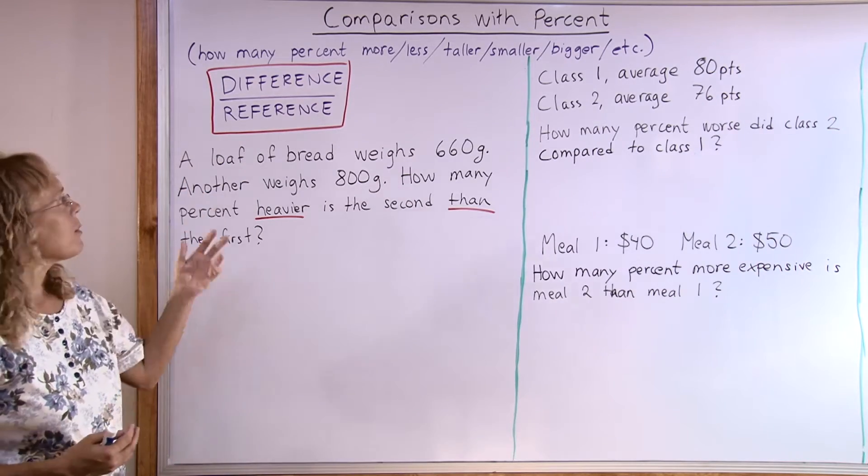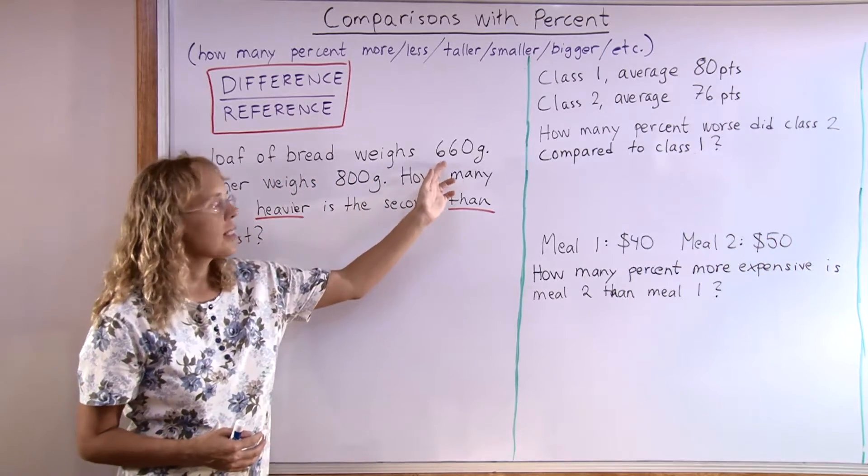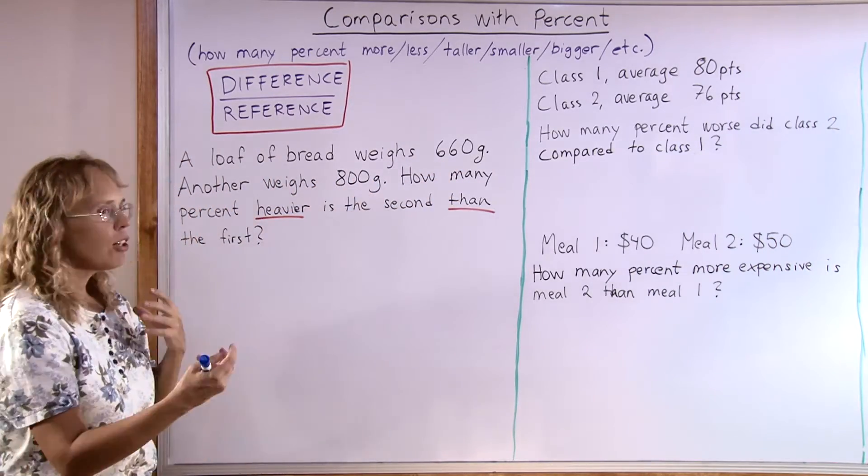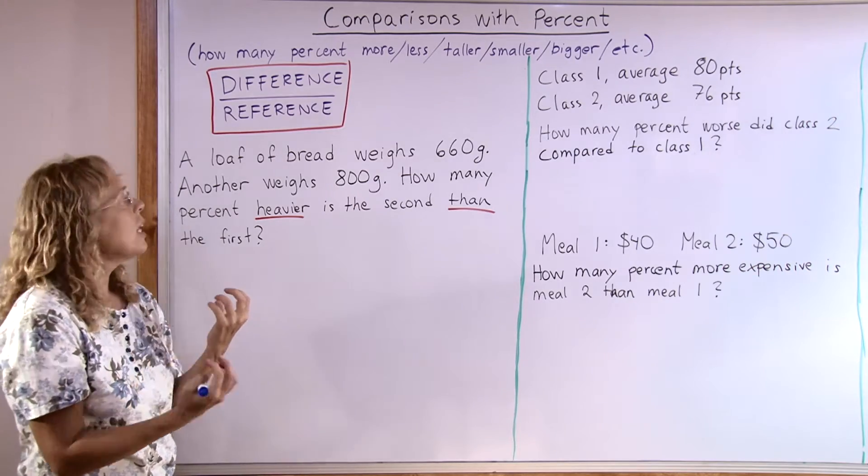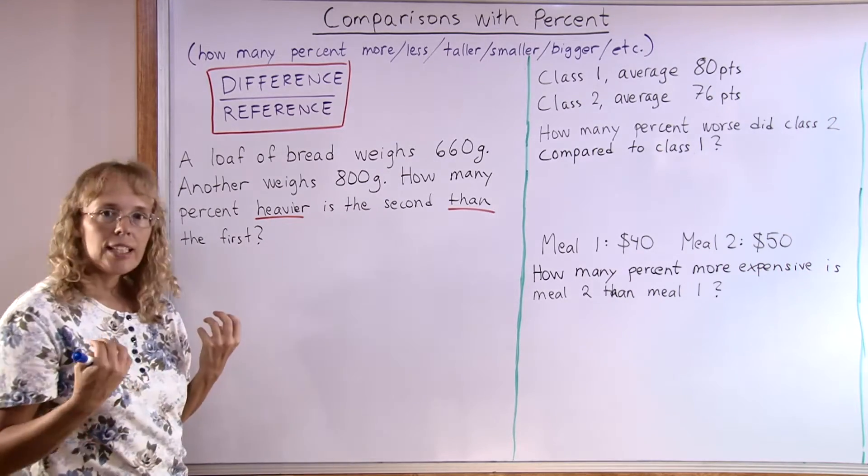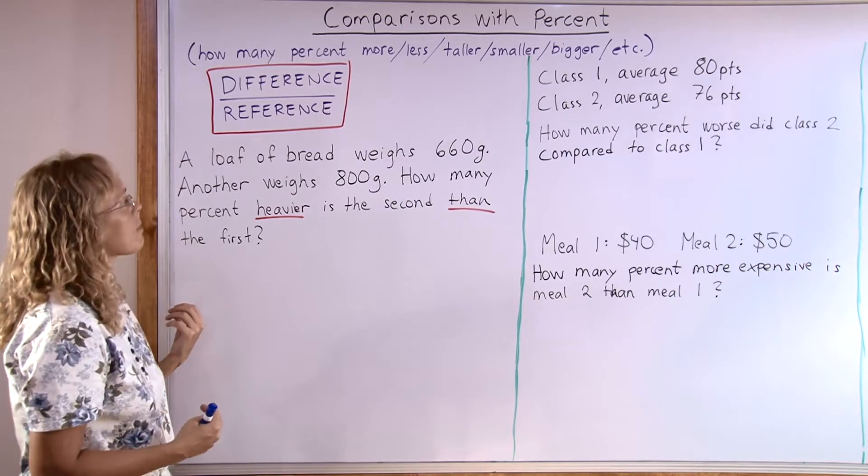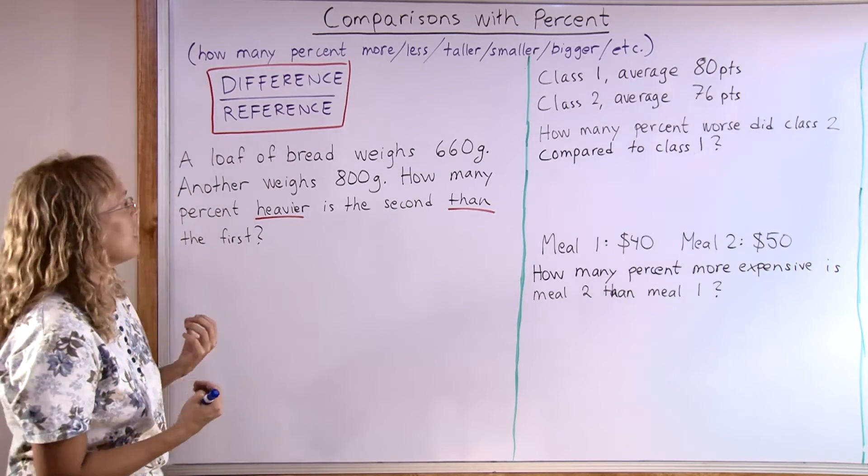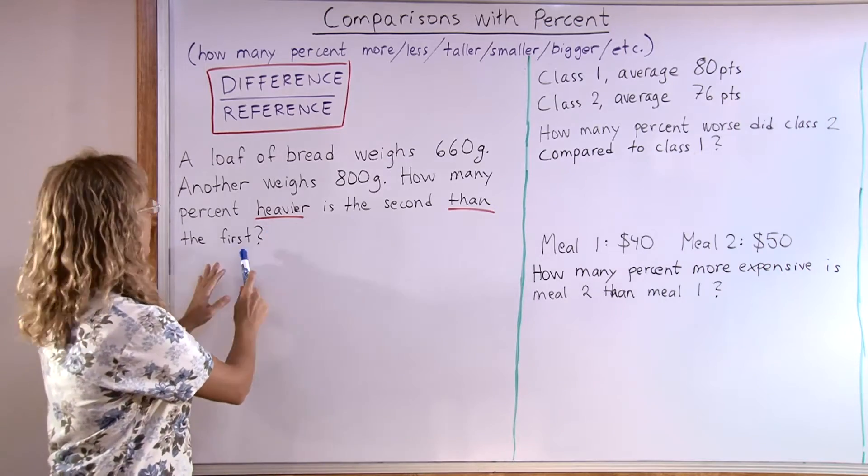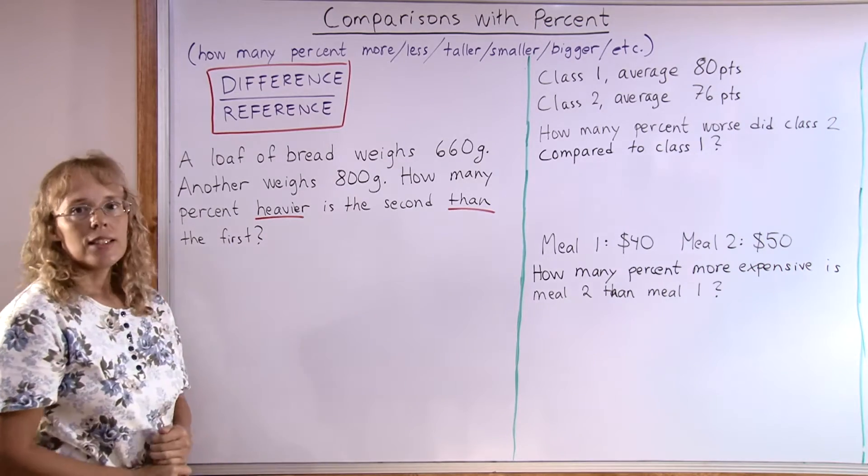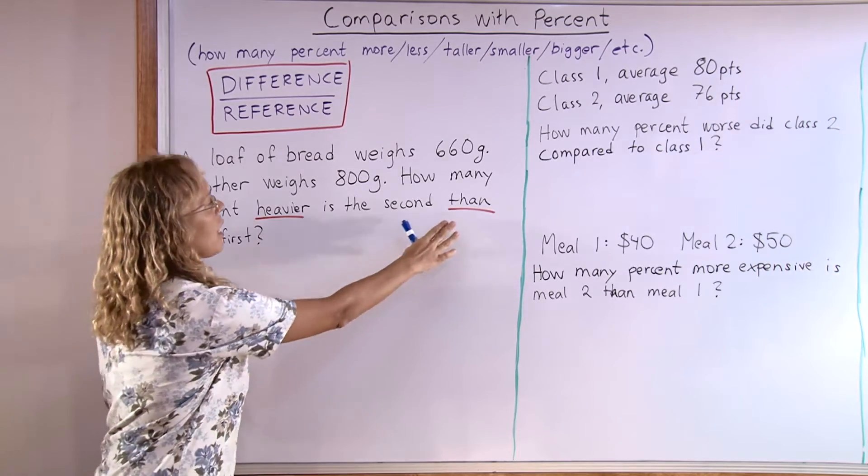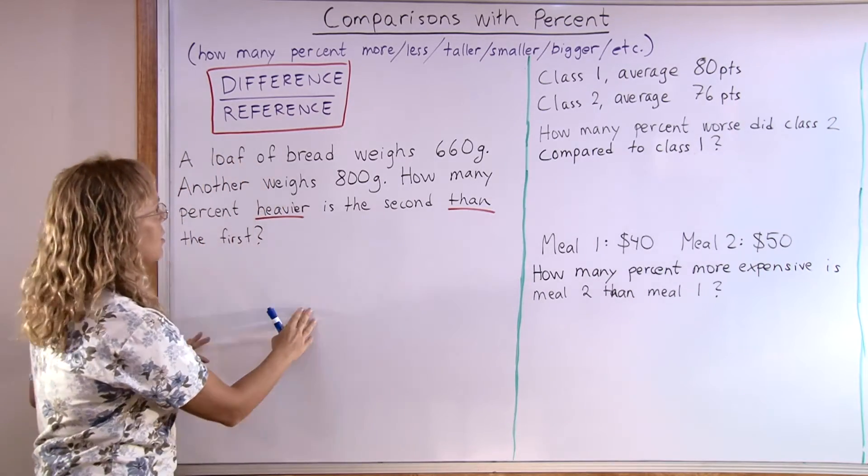Let's say we have two loaves of bread. A loaf of bread weighs 660 grams and another weighs 800 grams. And now we are comparing those two: how many percent heavier is the second one than the first? Now here, our reference bread is the first one, and you can see it from the wording. We are comparing it to the first one. It is after the word 'than'.